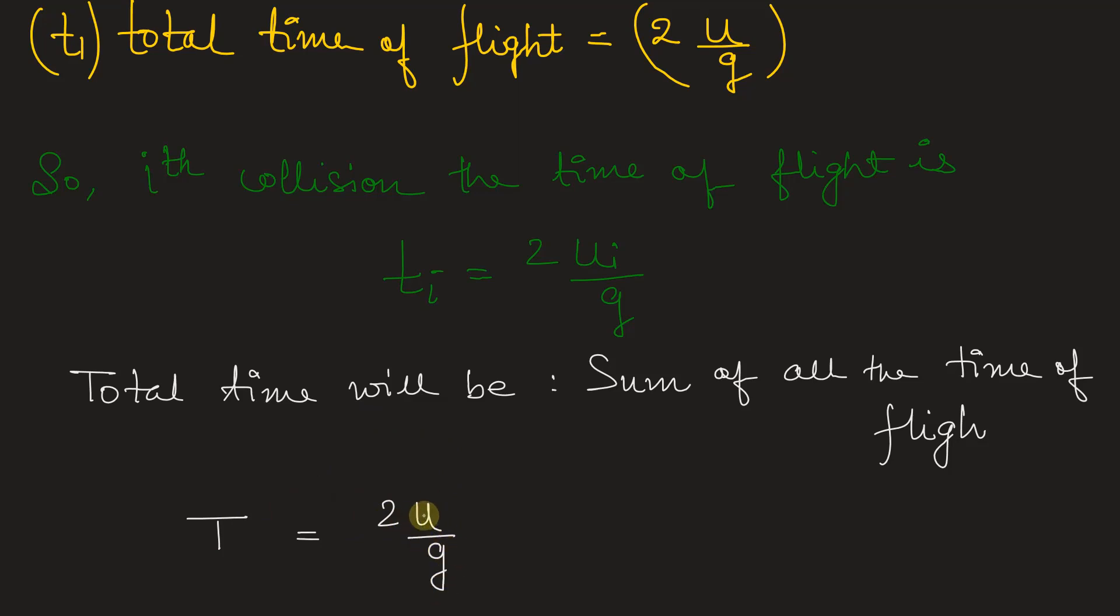Will be equal to time taken for first collision is 2 times u by g, u is the initial velocity that is 4. So let's write here u1 plus 2 times u2 by g, u2 is the time before second collision.